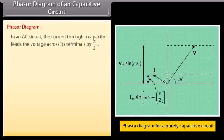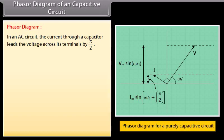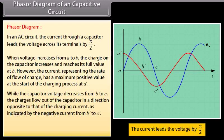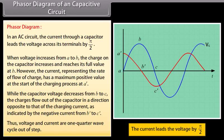Phasor diagram of a capacitative circuit: in an AC circuit, the current through a capacitor leads the voltage across its terminals by π/2. When voltage increases from A to B, the charge on the capacitor increases and reaches its full value at B. However, the current representing the rate of flow of charge has a maximum positive value at the start of the charging process at A dash, while the capacitor voltage decreases from B to C. Thus, voltage and current are one quarter wave cycle out of step.